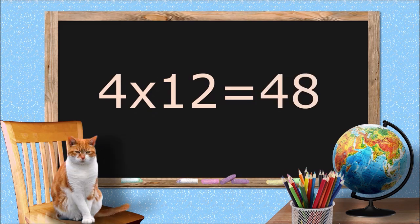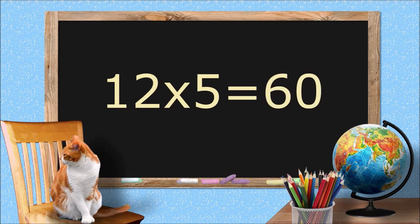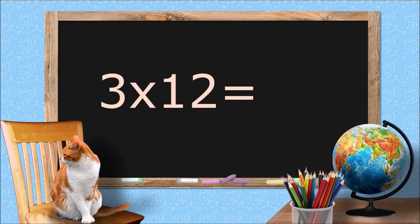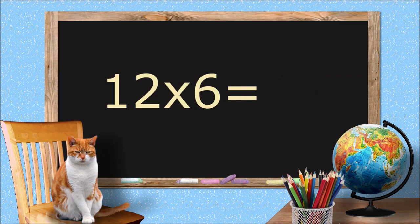48. 12 times 5 equals 60. 3 times 12 equals 36. 12 times 6 equals 72.